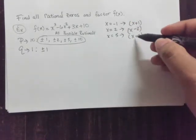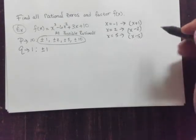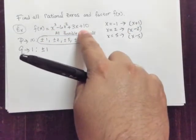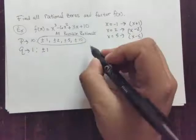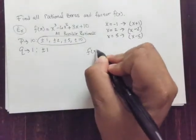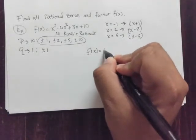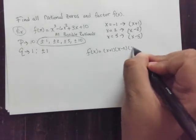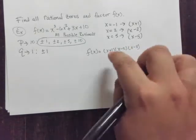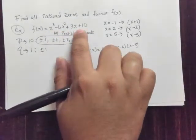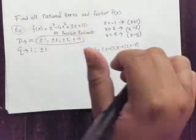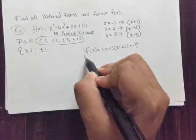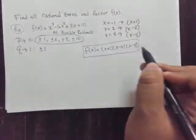And it just so happens that when you multiply these three binomials, you get this polynomial here exactly. So the polynomial f of x factored looks like this, x plus 1 times x minus 2 times x minus 5. So if you expand this right here, you should get this function right here that we started off with. So it's really not too difficult of a problem.